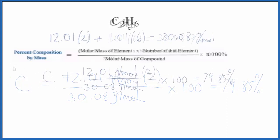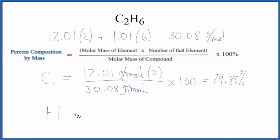Let's do it for hydrogen now. Hydrogen on the periodic table is 1.01 grams per mole. I'm not going to write the units since they cancel out. And we have 6 hydrogen, so the number of the element is 6.